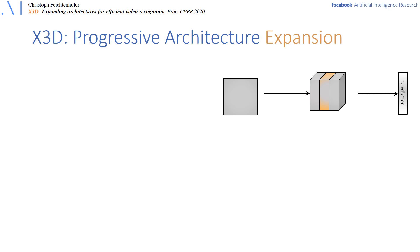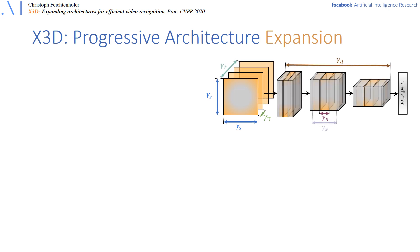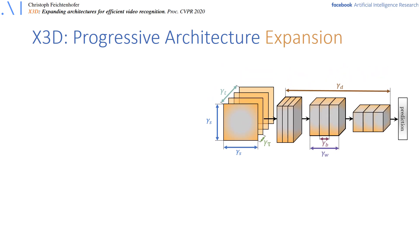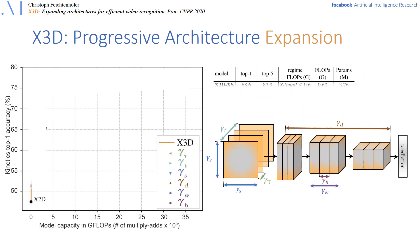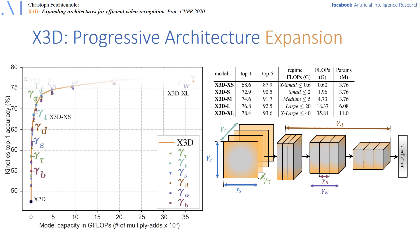In the experiments, the expansion starts with X2D, the tiny image model with a single frame, and expands it first across the bottleneck width of the model, then the frame rate, the spatial resolution, the depth, the network, and finally also the global width of all layers. The output of our expansion are a sequence of models from extra small to extra large capacity. We exponentially increase the model complexity in each expansion step by doubling it.